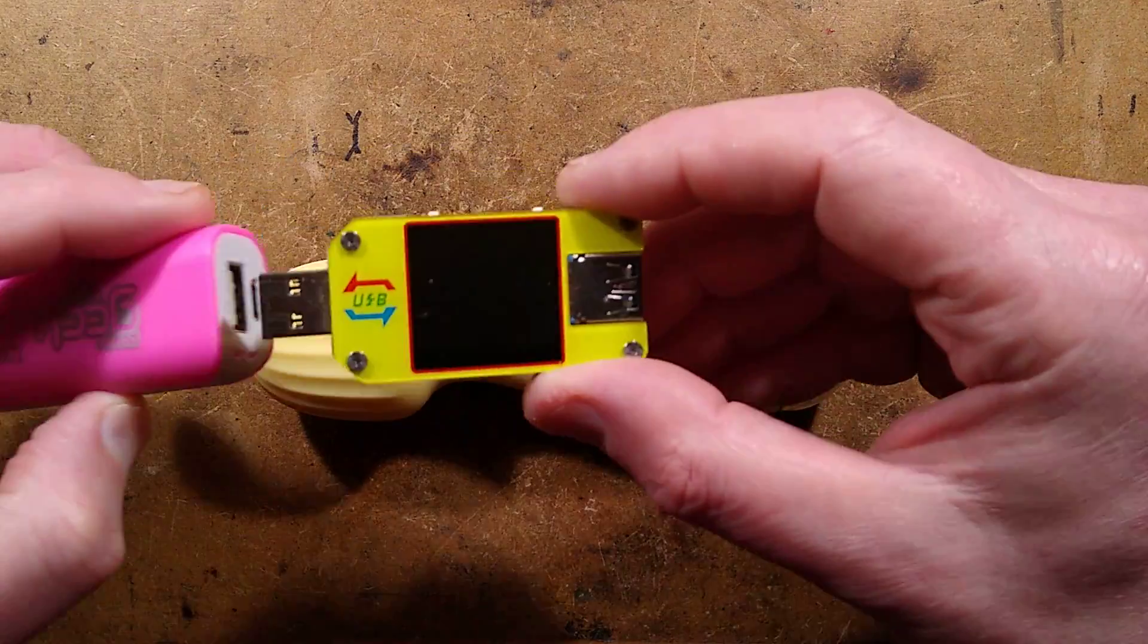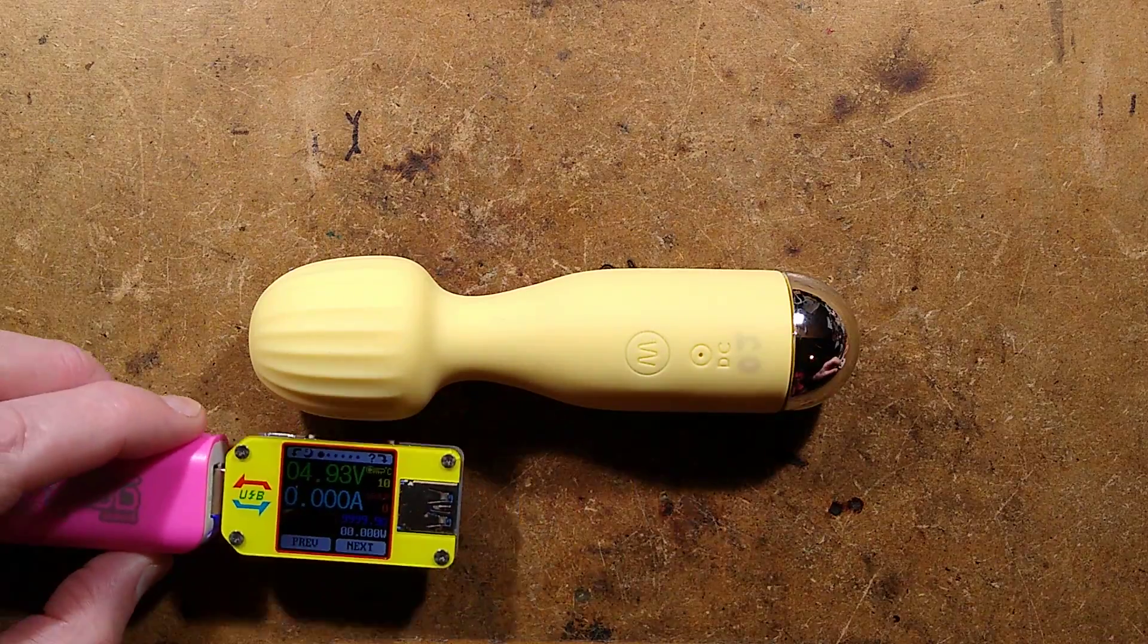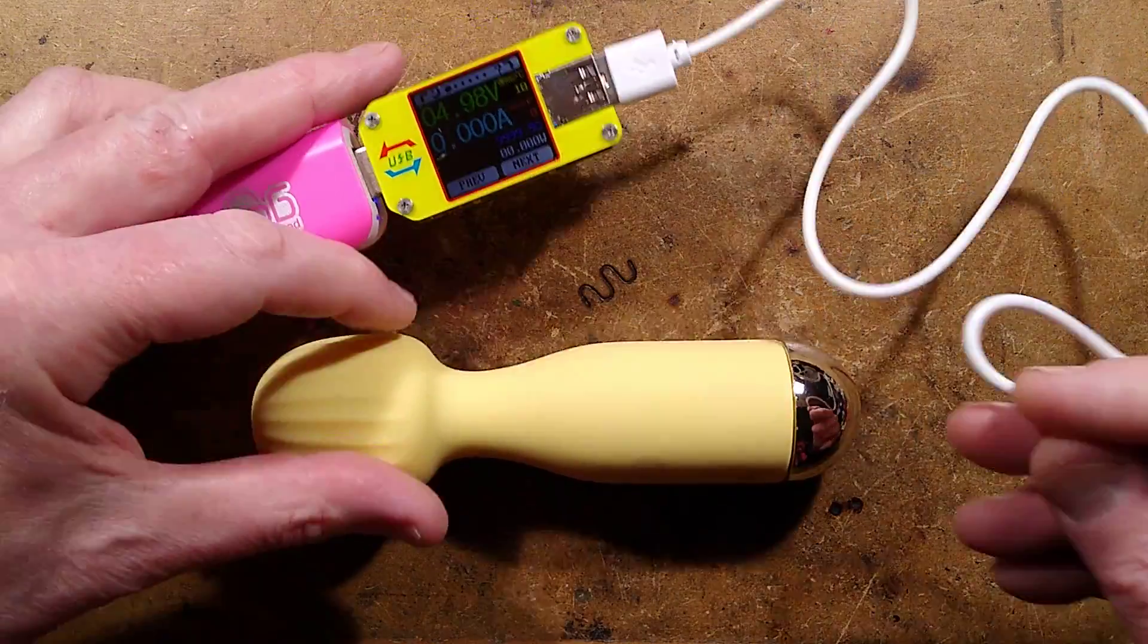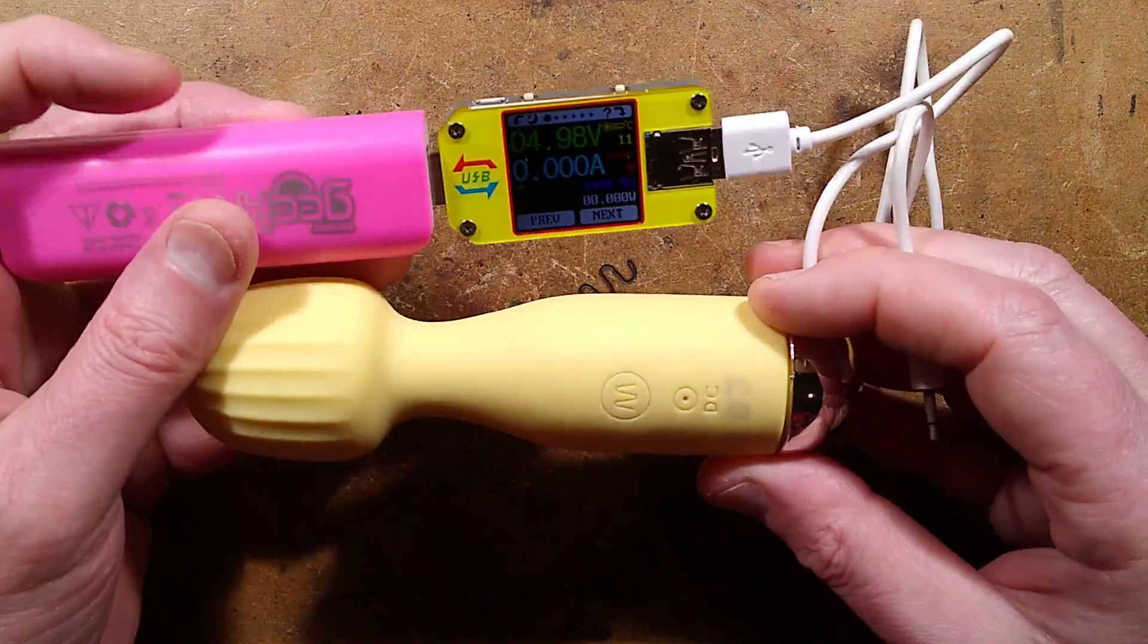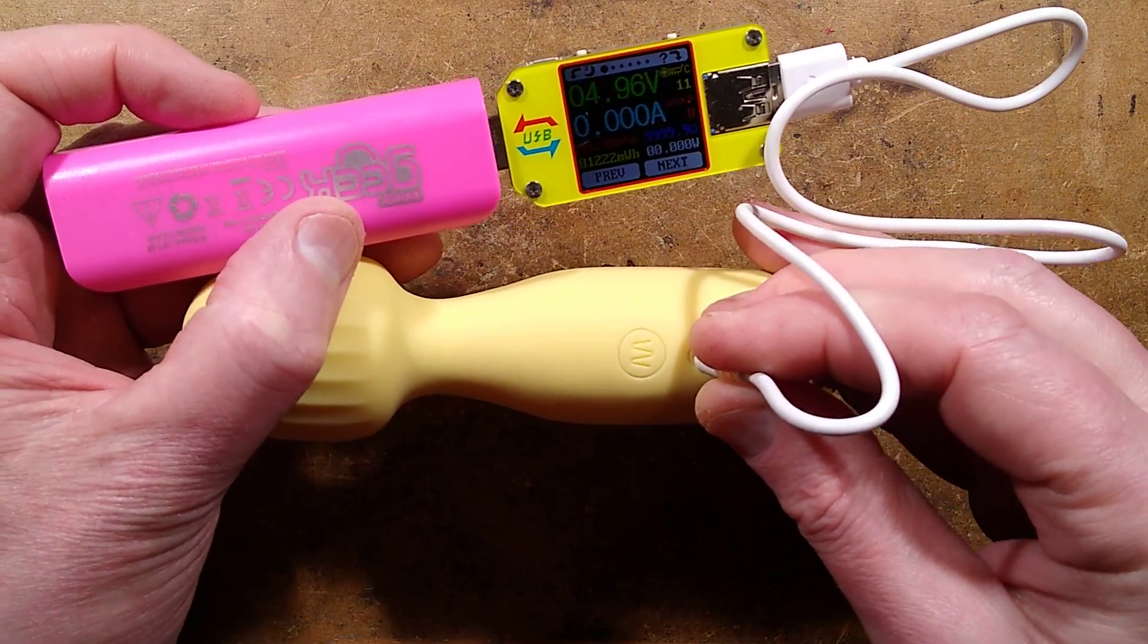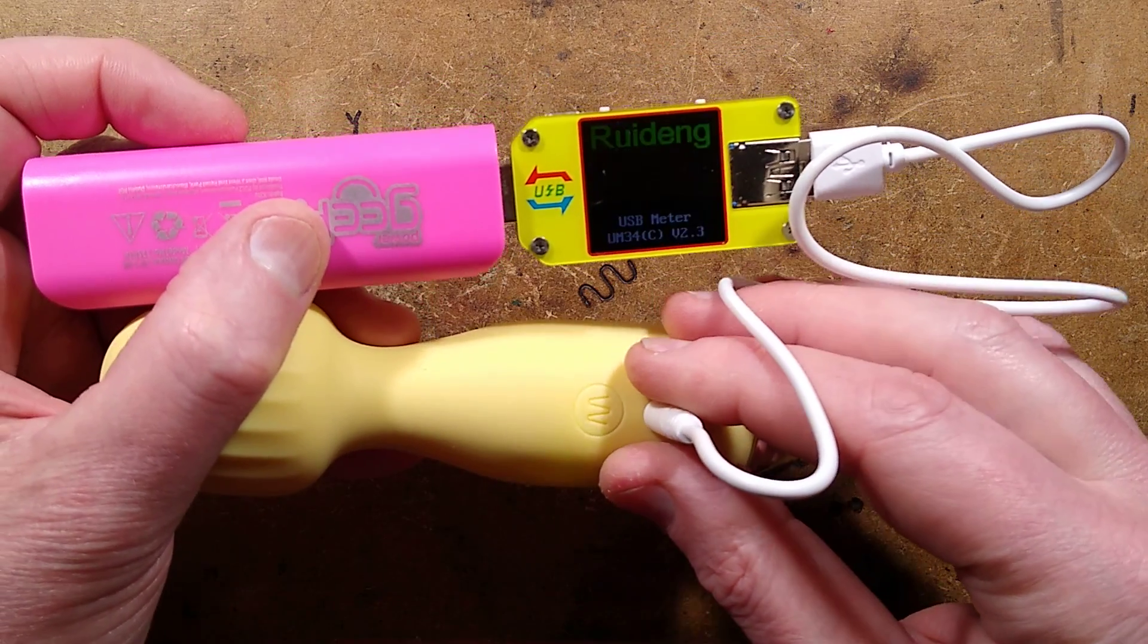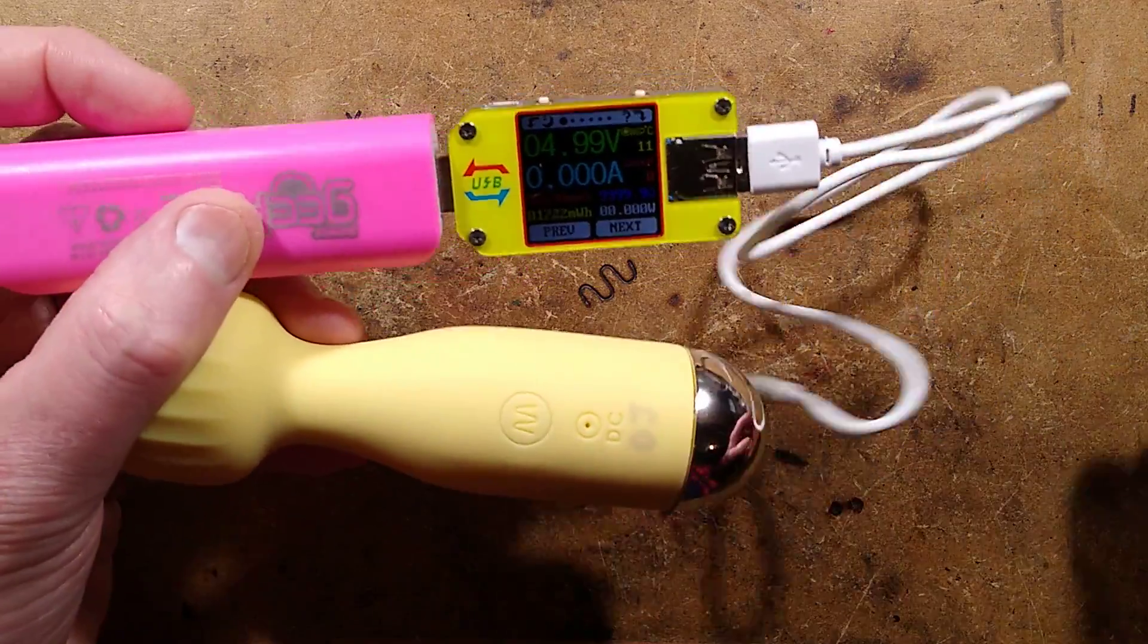This is USB rechargeable. If I plug the charger in here and plug the lead in here and then plug it into charge, which you do by stuffing it through this little orifice, it starts charging. But if you wiggle the lead at all, it instantly shorts out the power supply. So that's not particularly ideal.